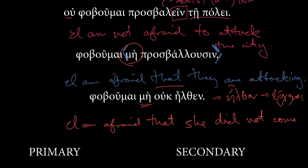Next, we get φοβοῦμαι μὴ οὐχ ἦλθεν. So, I am afraid that, again, that's what we're doing with μή, that he, she, it, let's have it be she, did not come.